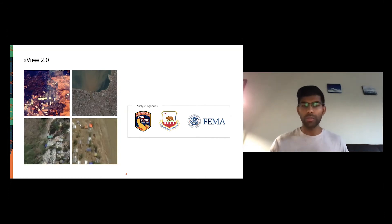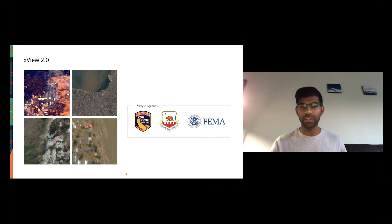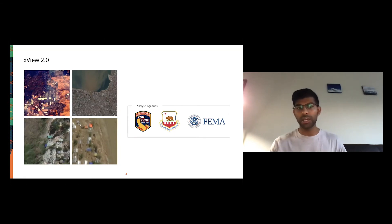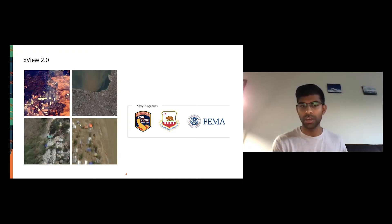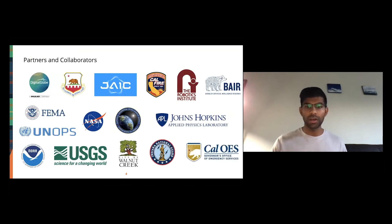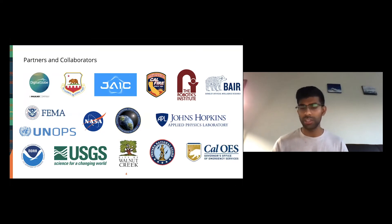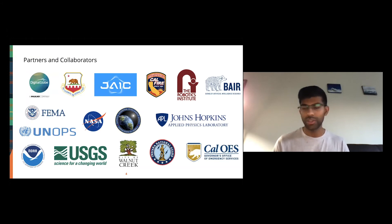We asked: how can we make this task easier and create something that allows analysis agencies to do a better, faster job of damage assessment, especially over large areas like California wildfires? We created a prize challenge called XView2 that collected over 850,000 damage annotations for buildings across 45,000 square kilometers of imagery. I also want to give a quick shoutout to our partners — over 40 agencies worldwide — specifically the National Geospatial Intelligence Agency, Cal Air National Guard, and the Joint AI Center. Without them, this would have been impossible.